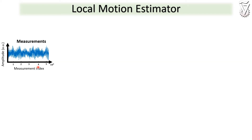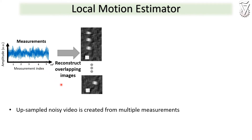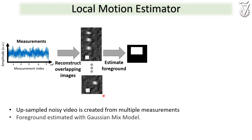For a local motion estimator, we use our measurements to reconstruct an initial up-sampled noisy series of images. Using these images, we estimate the foreground pixels where the motion occurs.